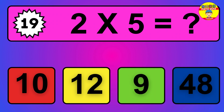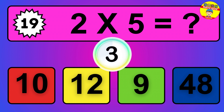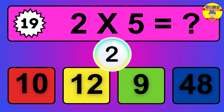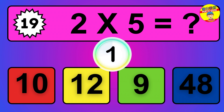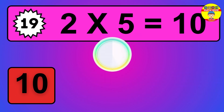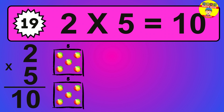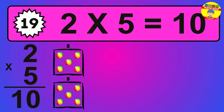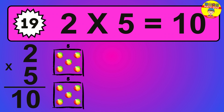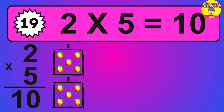Question 19. 2 times 5 equals what? So the answer is 2 times 5 is 10. To calculate, we have 2 groups with 5 balls each one. So how many balls do we have? 10 balls.